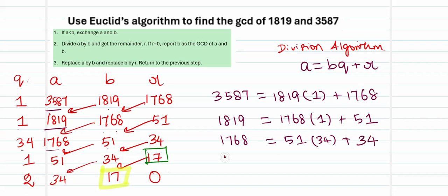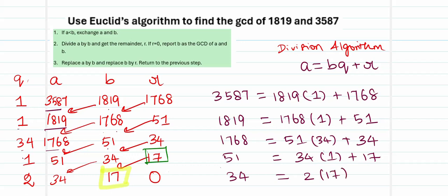Continuing, 51 = 34 × 1 + 17. In the last stage, 34 = 17 × 2 + 0. This way of expressing the values obtained using Euclid's algorithm in the format of the division algorithm will help us to find the values for the constants S and T, given by variables M and N, of the extended Euclid's algorithm which will be covered in the next video.